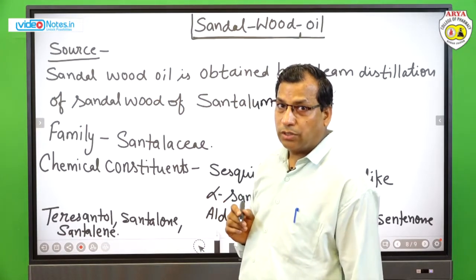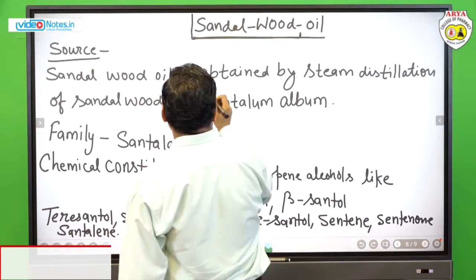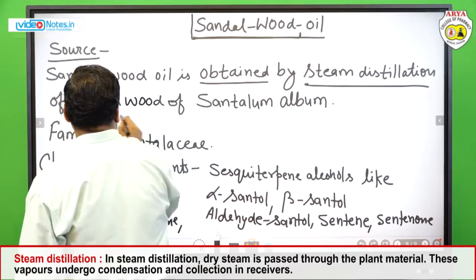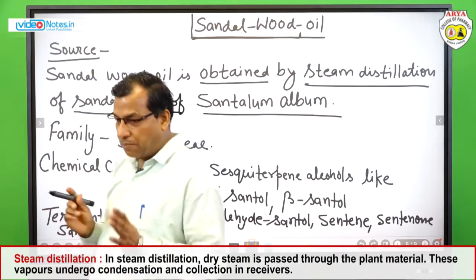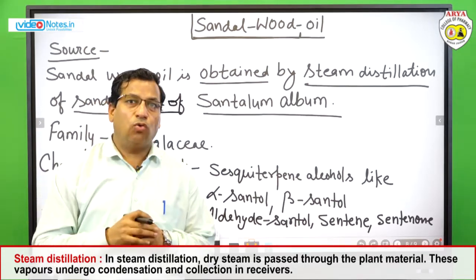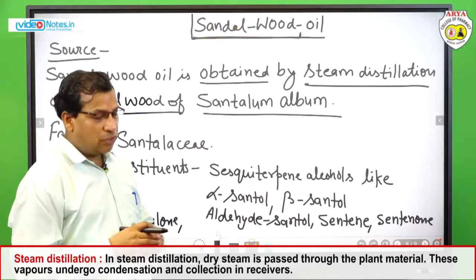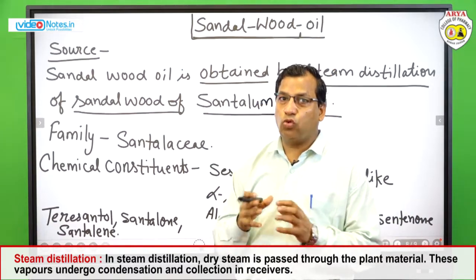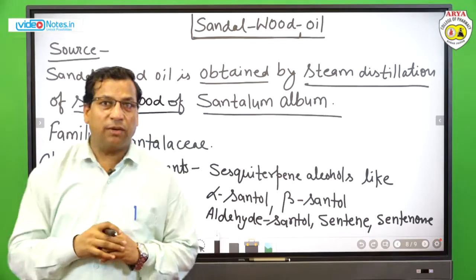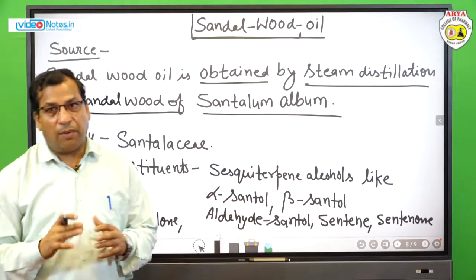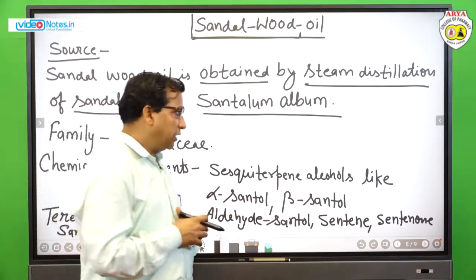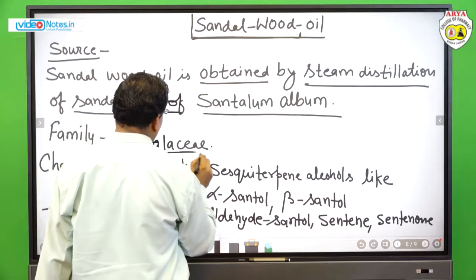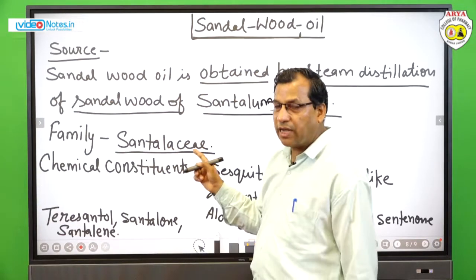Sandalwood oil is obtained by the steam distillation process of the sandalwood of Santalum album. The sandalwood tree is called Santalum album — its wood is made into a coarse powder, and from that powder, the volatile oil is extracted by steam distillation. This plant belongs to the family Santalaceae.